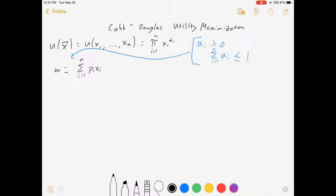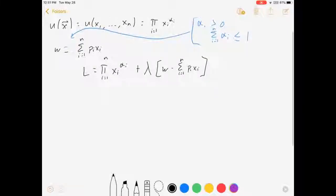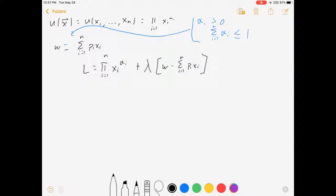So let's build our Lagrangian. Our objective function is the utility function plus the Lagrangian multiplier, lambda times w minus the sum of pi xi. There it is. That's the thing we got to maximize. Thank you, blue, for making lambda be greater than zero.